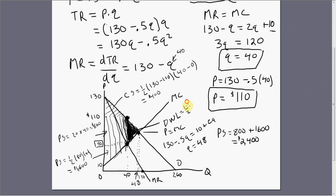One-half base times height, so we've got 110 minus 90 is 20, multiplied by 48 minus 40 is 8, so we've got $80 of deadweight loss. And that is how you find consumer surplus, producer surplus, and the deadweight loss under monopoly.